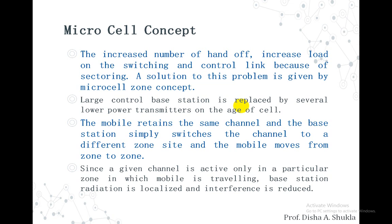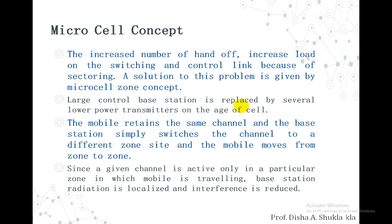Since a given channel is active only in the particular zone in which the mobile is traveling, the base station radiation is localized — meaning the base station radiates its power only in a particular local area — and hence the interference is reduced.